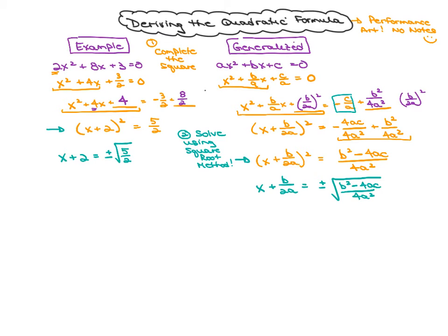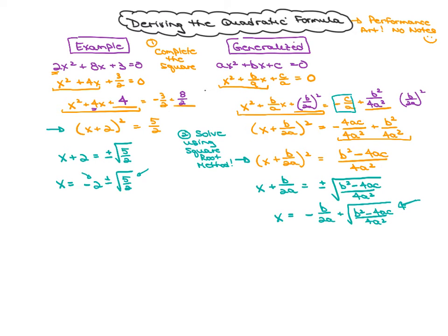Finally, let's isolate our variable x. For the example, I subtract 2 from both sides, so x equals negative 2 plus or minus the square root of five halves. By convention we put the number first and then the plus or minus radical. For the generalized form, I subtract b over 2a from both sides, giving negative b over 2a plus or minus the square root of b squared minus 4ac all over 4a squared. Are you starting to see the quadratic formula? We've got the negative b over 2a and the plus or minus.